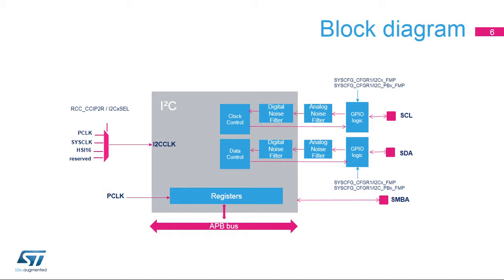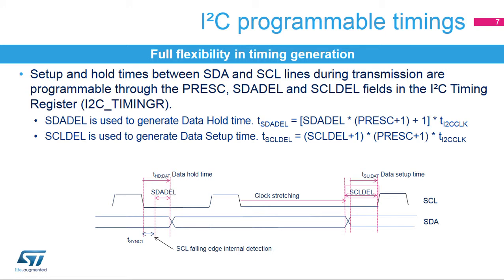The I2C clock can be selected from among the APB clock, the high-speed internal RC oscillator, and the system clock. Analog and digital noise filters are present on the SCL and SDA lines. A 20 milliamp driving capability is enabled using the control bits in the system configuration registers. In addition, an SMBus alert pin is available in SMBus mode. The I2C setup and hold times can be configured by software through the I2C timing register.